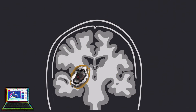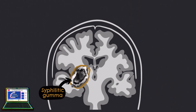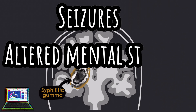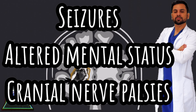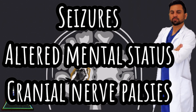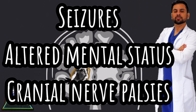Firstly, we have cerebral syphilitic gumma — a granulomatous inflammatory lesion that can occur in various tissues including the central nervous system. These are inflammatory responses caused by the invasion of T. pallidum into the CNS. They present as mass lesions leading to neurological symptoms including seizures, altered mental status, and cranial nerve palsies. Treatment involves high-dose intravenous penicillin, which can help resolve the gumma and alleviate neurological symptoms.